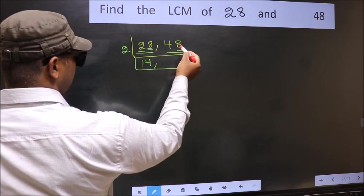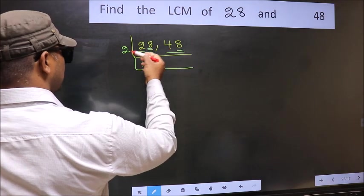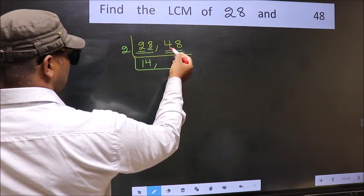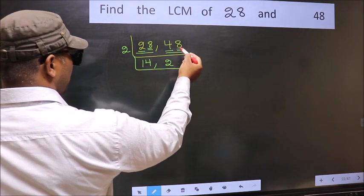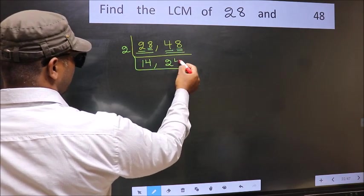Now the other number 48, last digit 8 is even, so this is divisible by 2. First number 4: when do we get 4 in 2 table? 2 twos 4. The other number 8: when do we get 8 in 2 table? 2 fours 8.